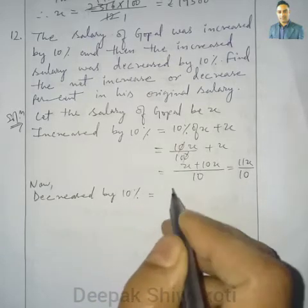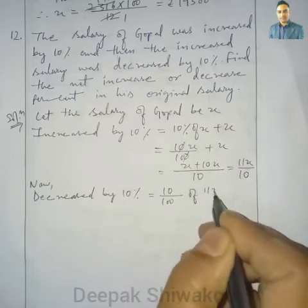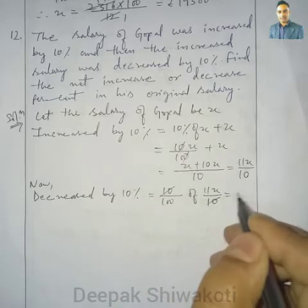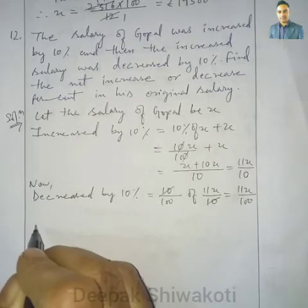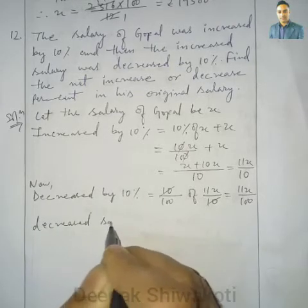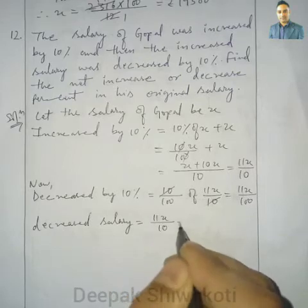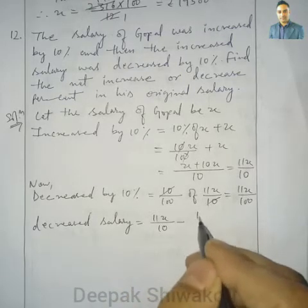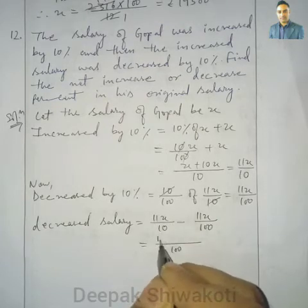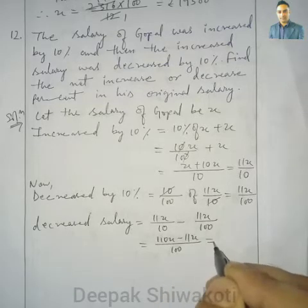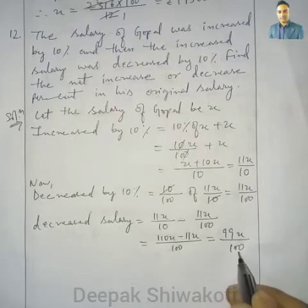Now decreasing by 10 percent: 10 percent of 11x by 10. The 10s cancel, giving 11x by 100. The decreased salary equals increased salary minus this: 11x by 10 minus 11x by 100. Taking LCM as 100: 110x minus 11x equals 99x. So the decreased salary is 99x by 100.